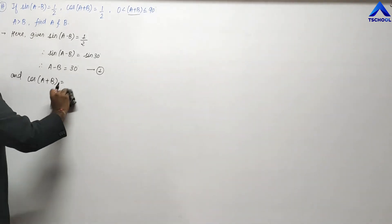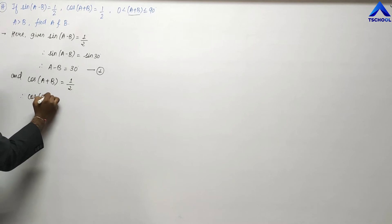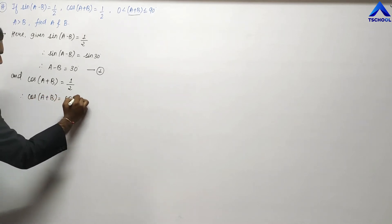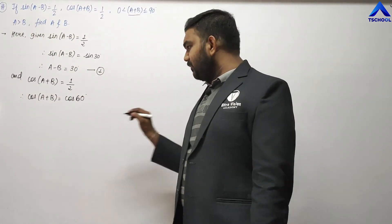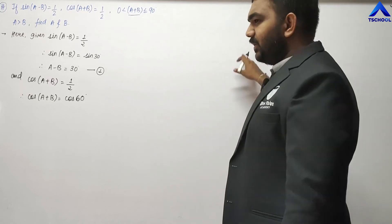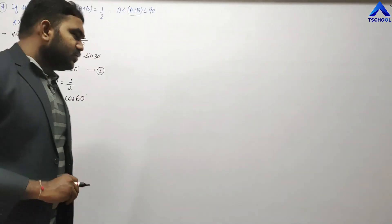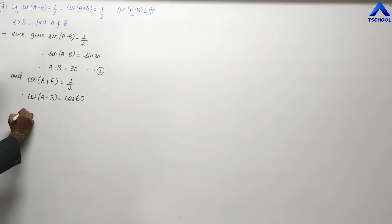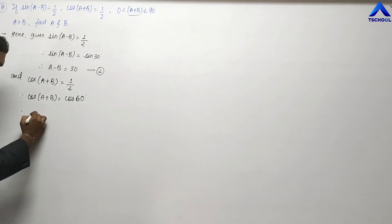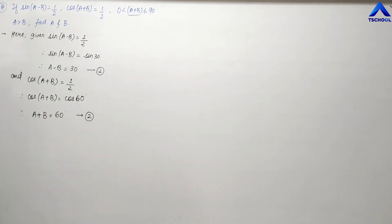Also, cos(A + B) = 1/2. From the cos table, cos 60 = 1/2. So cos(A + B) = cos 60. Therefore A + B = 60 degrees. This is our second equation. Now we want the individual values of A and B.